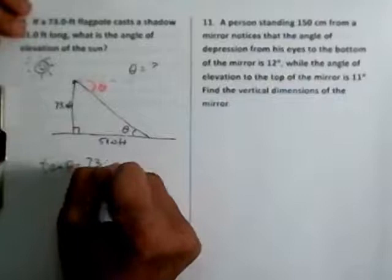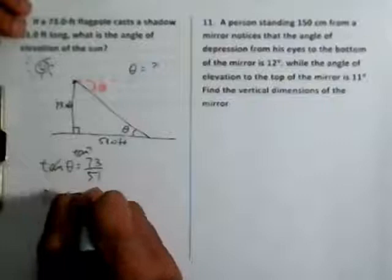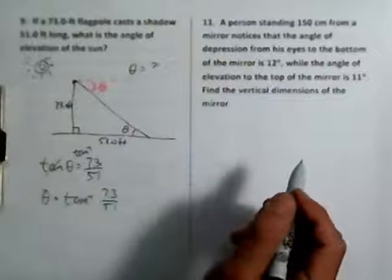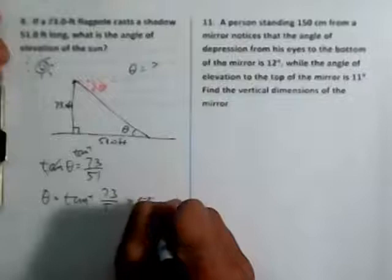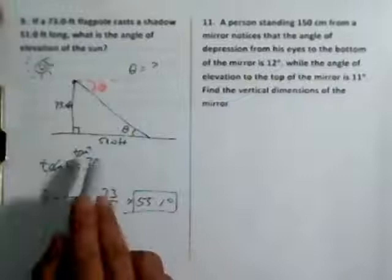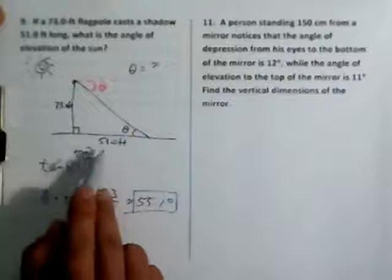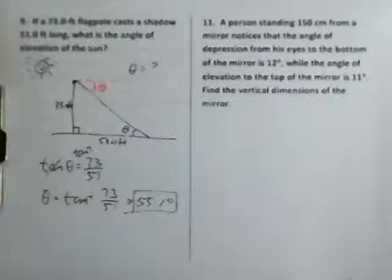Tangent of theta equals 73 divided by 51, so theta equals the tangent inverse of 73 divided by 51. Calculating on the calculator gives approximately 55.1 degrees. I used three significant figures because the given values — 73.0 feet and 51.0 feet — each have three significant figures.